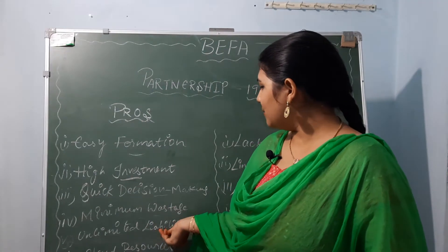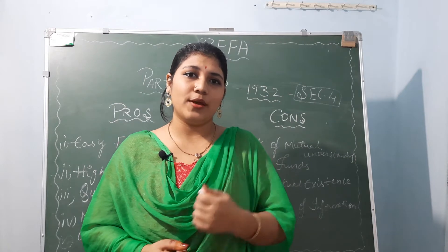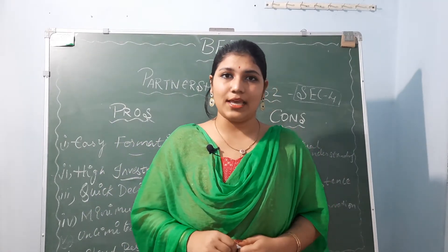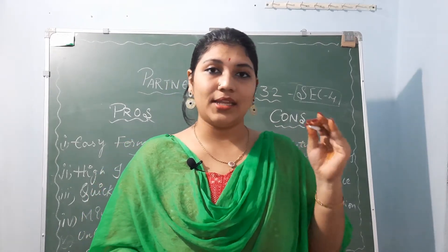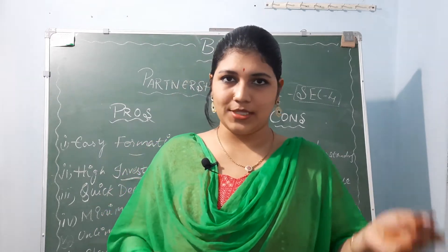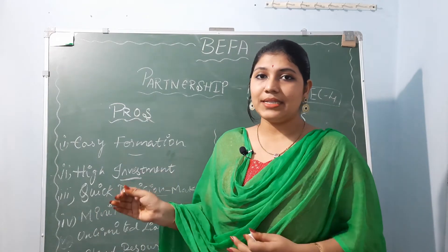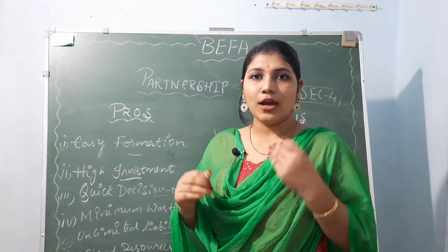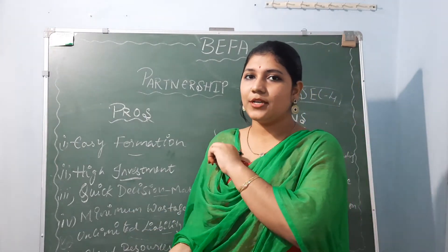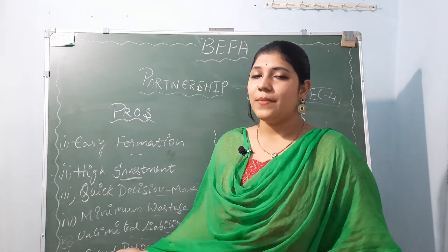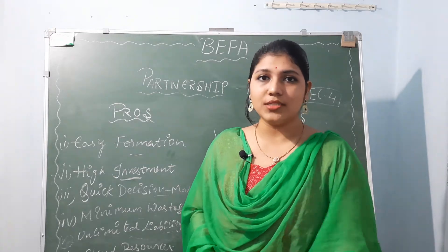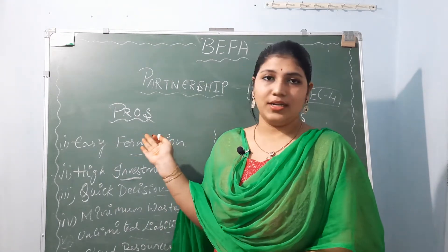Unlimited liability of partners. The point sounds like a disadvantage, but you may wonder why it is considered a pro of partnership. As we discussed in characteristics, unlimited liability means whenever there is an unexpected debt occurring in the business, we have to put our personal amounts or property assets to clear that. This means we can raise much more funds. Each partner has unlimited liability, meaning each and every partner can raise more and more funds for the business — and that is obviously an advantage.